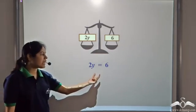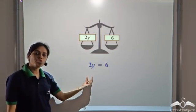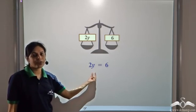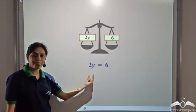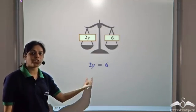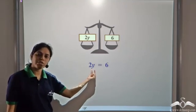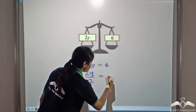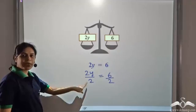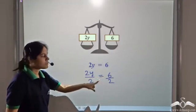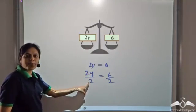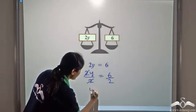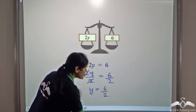Now if we have 2y is equal to 6, in order to have only y on one side, we divide both sides of the equation by 2. So we have 2y divided by 2 is equal to 6 divided by 2. 2y divided by 2 gives us only y because the 2s get cancelled. So y is equal to 6 by 2.